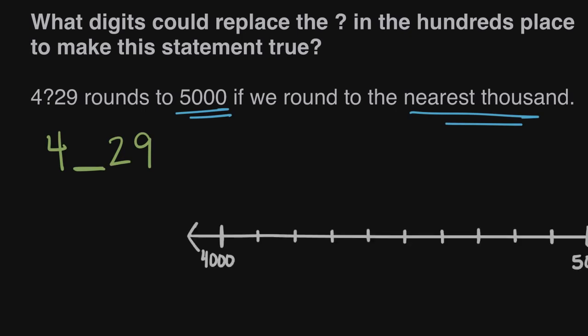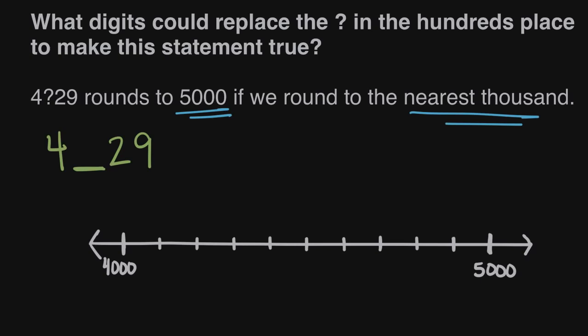So let's draw that, let's show that on a number line. Here's a number line that goes from 4,000 to 5,000 and then the hundreds here are marked. So this would be 4,100, 4,200, 4,300, 4,400, so on all the way to 4,900 and then finally 5,000.